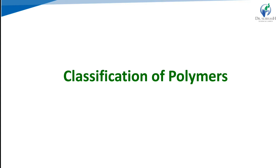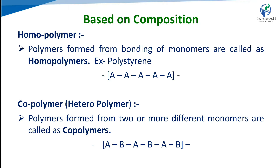The classification of polymers covers various types based on different parameters. Based on composition, polymers are classified as homopolymers and heteropolymers or copolymers. Homopolymers are made up of only one type of single monomer — for example, polystyrene. Copolymers, also called heteropolymers, are made up of more than two different types of monomers — for example, monomers A and B going through polymerization to form a copolymer.